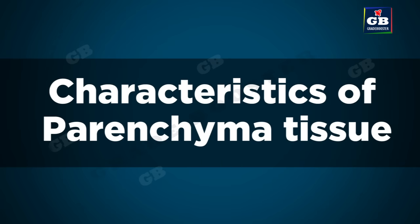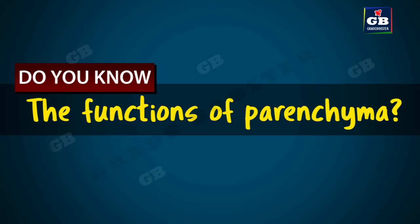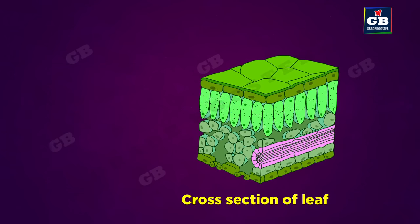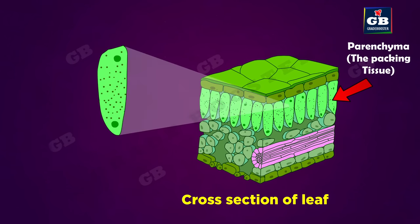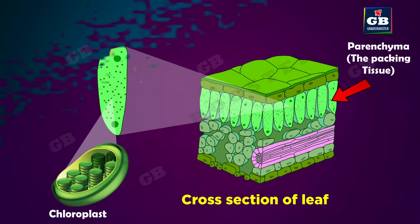First let us learn about parenchyma. The cells of parenchyma tissue are thin-walled. They are living cells. They are loosely packed and there are large spaces between the cells. The cells of parenchyma tissue present in the leaf consist of chloroplasts and perform photosynthesis. In such cases, this kind of parenchyma is called chlorenchyma.